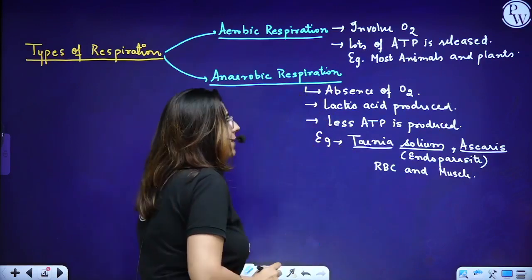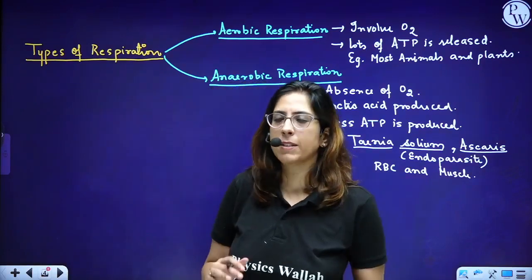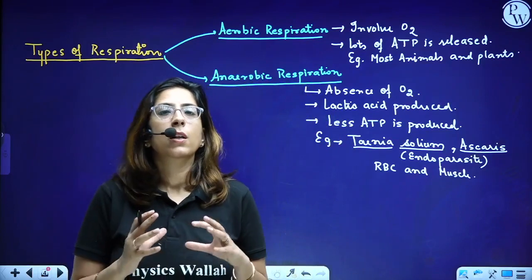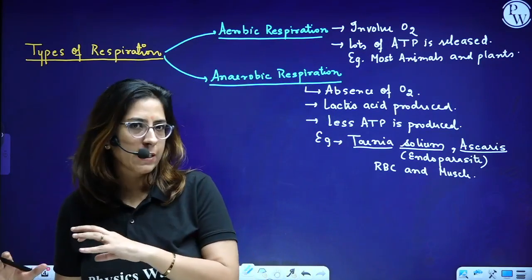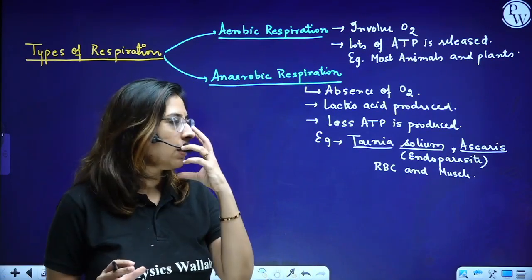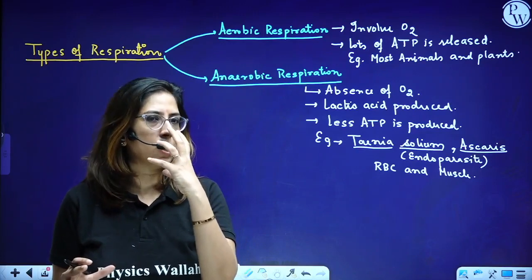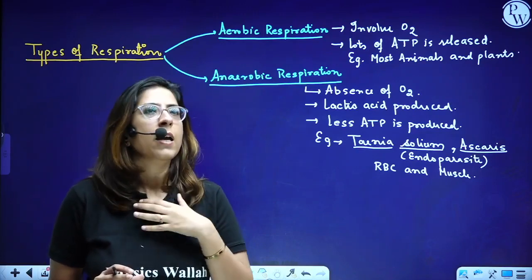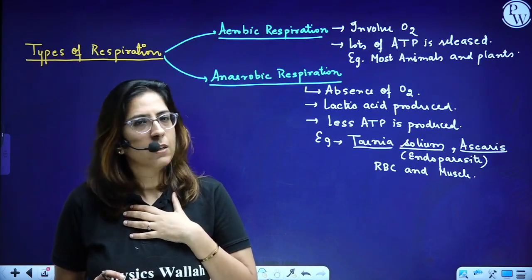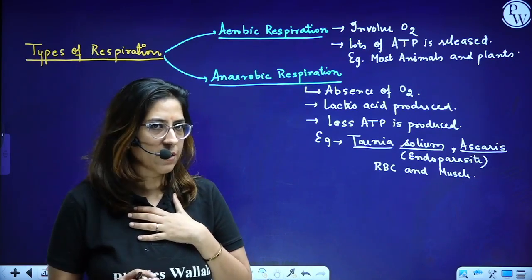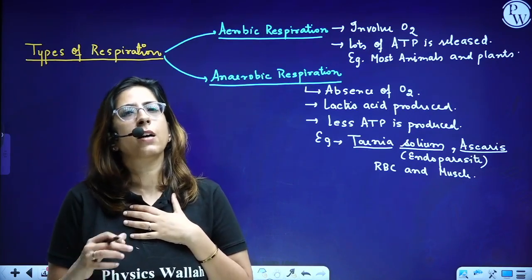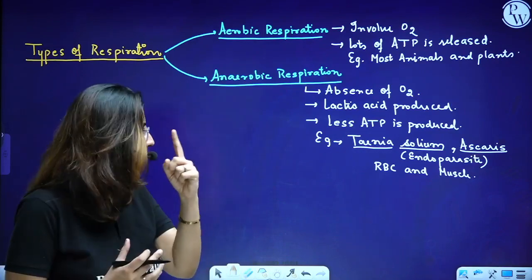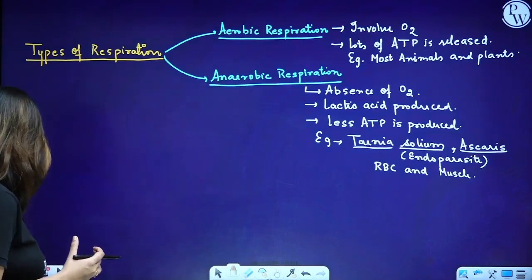In your syllabus and in your books, we will be talking about respiration occurring at various levels. Externally, respiration occurs where we take in some gases and release some gases. At the alveoli level, exchange of gases occurs. Then there is transport of gases, and then cellular respiration occurs. Let's talk about all of these one by one.